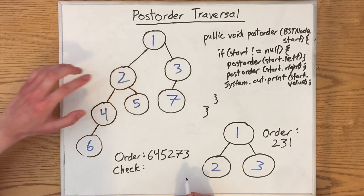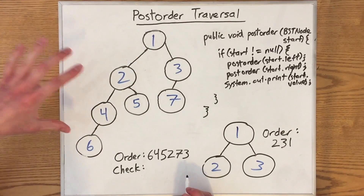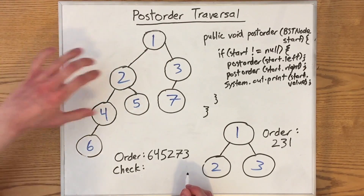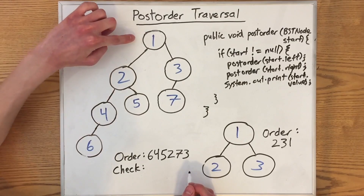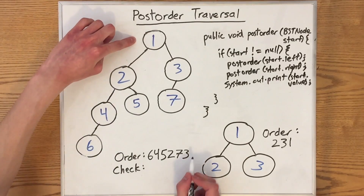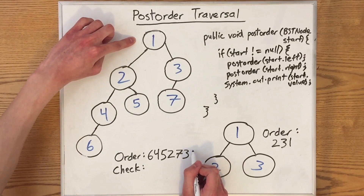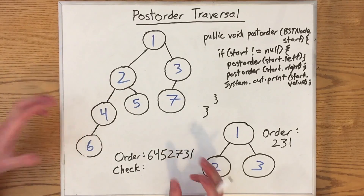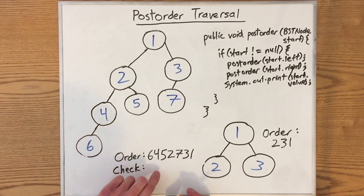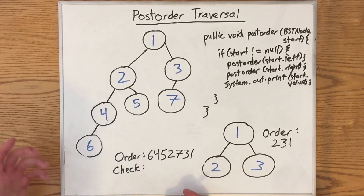Since we finally finished looking at both the left subtree and the right subtree, we can finally print out the value of our root. Very long and tedious, but we finished this tree. Looks like all our values show up in the tree.